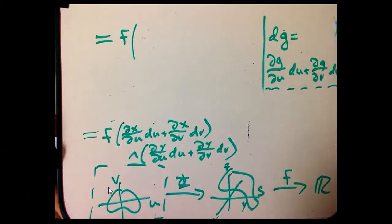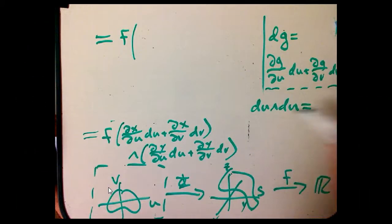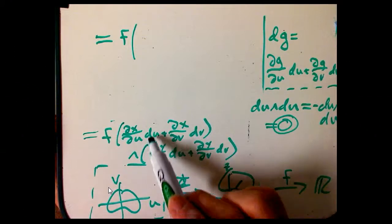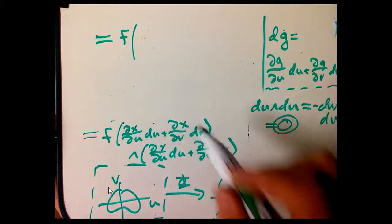Well, there's a very simple way to see why du wedge du has to be zero. It's because if we believe in that anti-symmetry, du wedge du has to be minus of du wedge du. When I switch the order, nothing happens. The only thing that's minus itself is zero. So that's a very cool thing, it's very much like the cross product, like i cross i being zero. Du wedge du is zero, dv wedge dv is zero. So that kills two of the four terms.